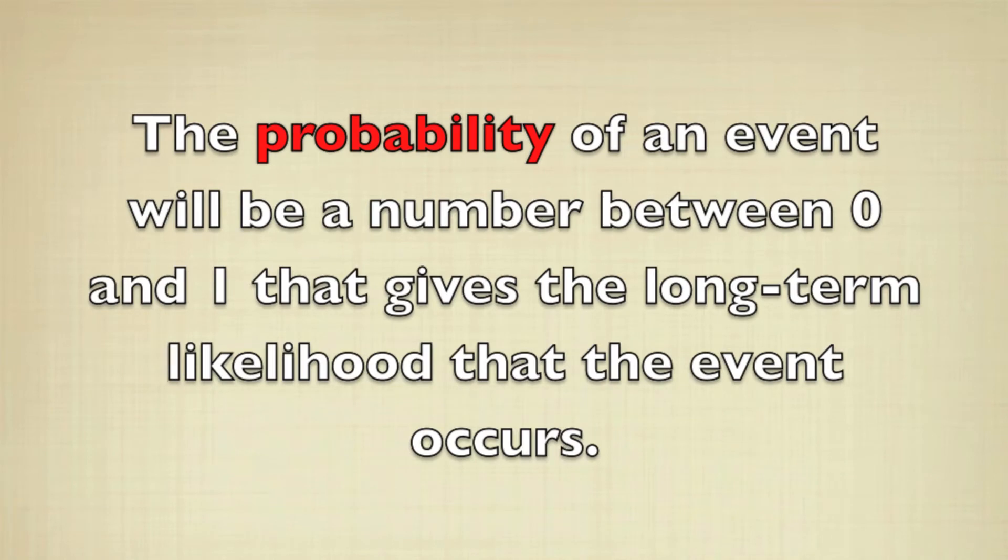The probability of an event will be a number between 0 and 1 that gives the long-term likelihood that the event occurs.